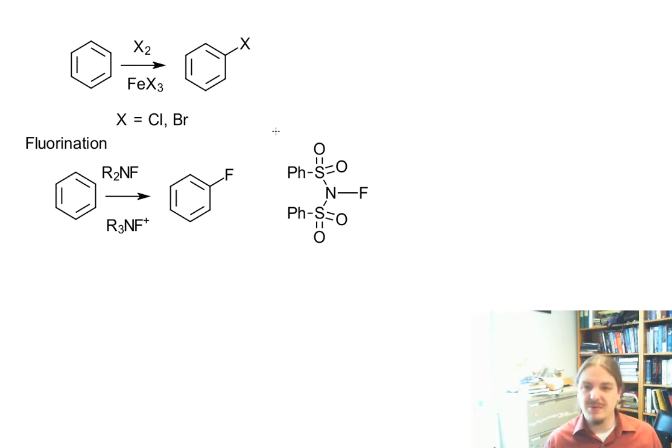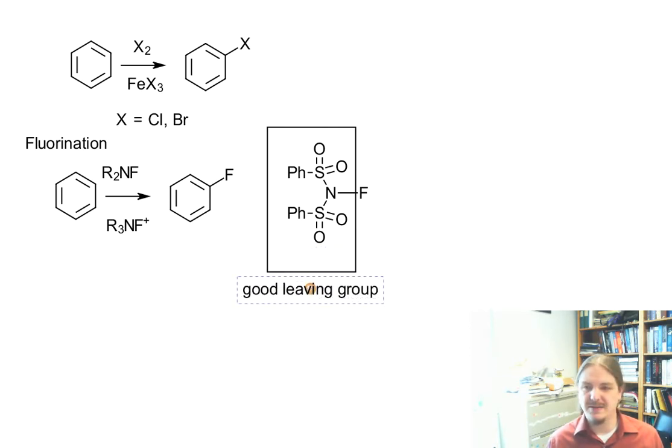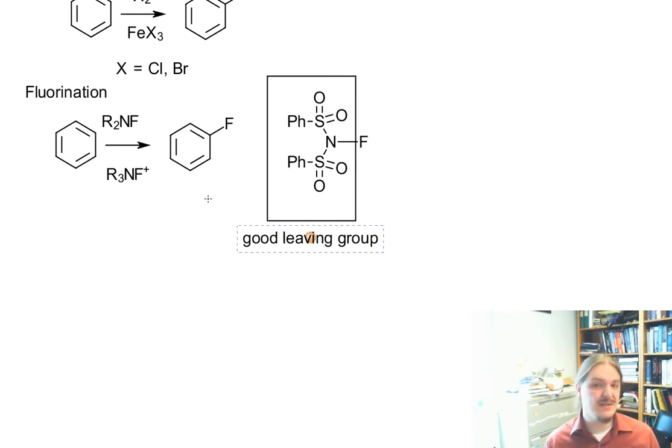But ultimately what we have here is a fluorine attached to something that is a good leaving group. And being attached to a good leaving group is something that turns things into good electrophiles.